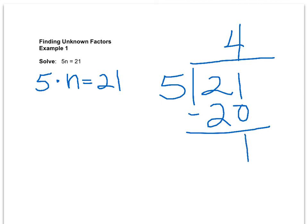All right, we do have a remainder, and since there are no decimals in this problem, we're going to write the remainder as a fraction. So our answer is four and one-fifth. So if we come back to our original problem, n equals four and one-fifth.